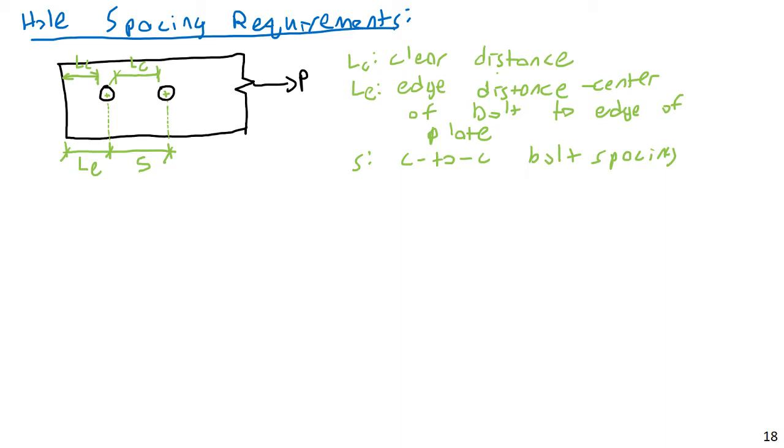So first, let's look at L sub C, the clear distance. For edge bolts, and edge bolts would be the bolts, this would be an interior bolt, this would be an edge bolt. So for edge bolts, L sub C is going to be equal to LE minus H over 2. And I'll explain what H means in a second. And for other, basically interior bolts, L sub C is equal to S minus H. Again, just ways of calculating the clear distance, or clear length, but I think of it in terms of clear distance.